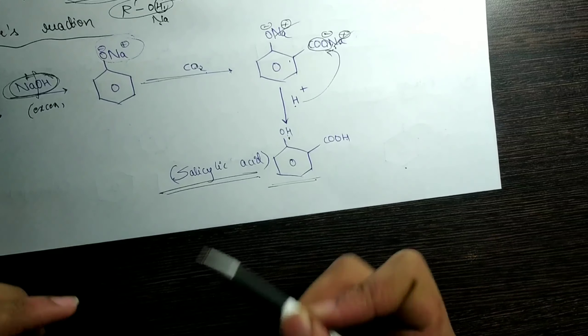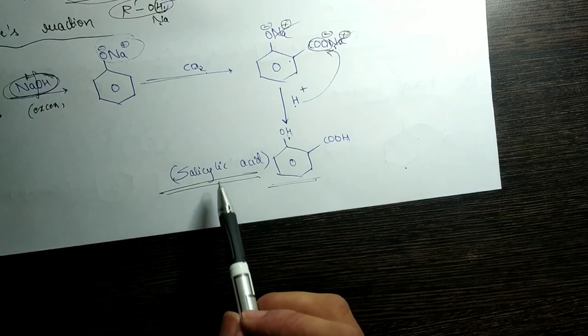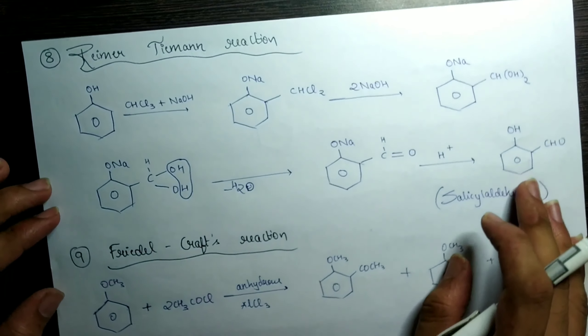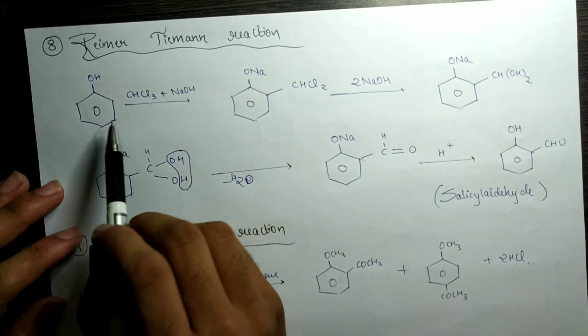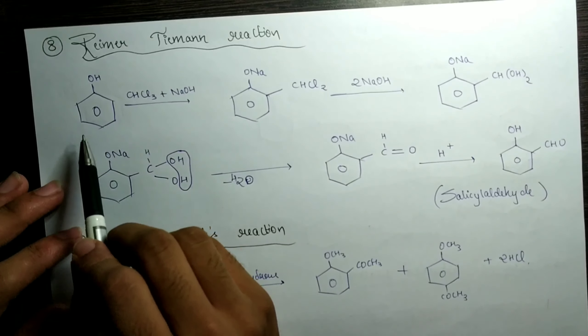The next reaction is Kolbe's reaction, which is pretty important and can be asked for two or three marks or as a sub-question in a five-mark question. We begin with phenol and make it react with NaOH — the Na⁺ replaces the hydrogen to give ONa, and this becomes an ionic compound. Now we add carbon dioxide gas — I think it's solid carbon dioxide, please confirm what kind of CO₂ is used here. The CO₂ comes and attaches between the Na and the benzene molecule.